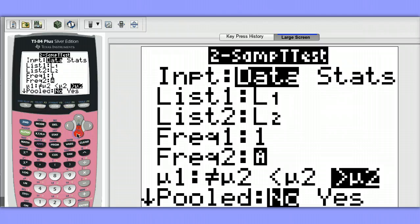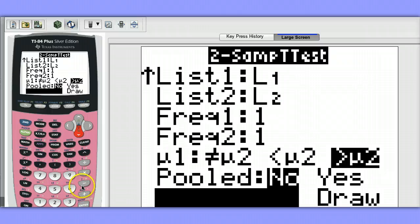And because I think the bounty paper towels are stronger and will hold more than the generic, I'm going to choose greater than. Pooled, I'm going to choose no, and then calculate.